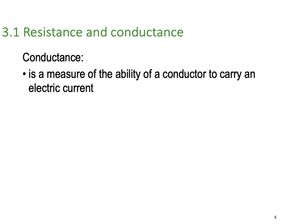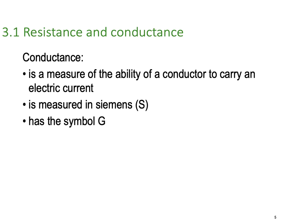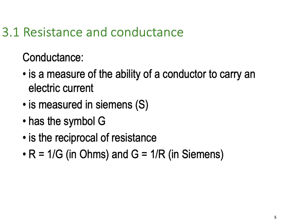Conductance is a measure of the ability of a conductor to carry electrical current. It's the exact opposite to resistance. It's measured in Siemens, named after a German physicist, and it uses the symbol capital G. It is the reciprocal or mathematical opposite of resistance. So R is one over G in ohms, and conductance is one over R in Siemens. They are the direct inverse of each other.